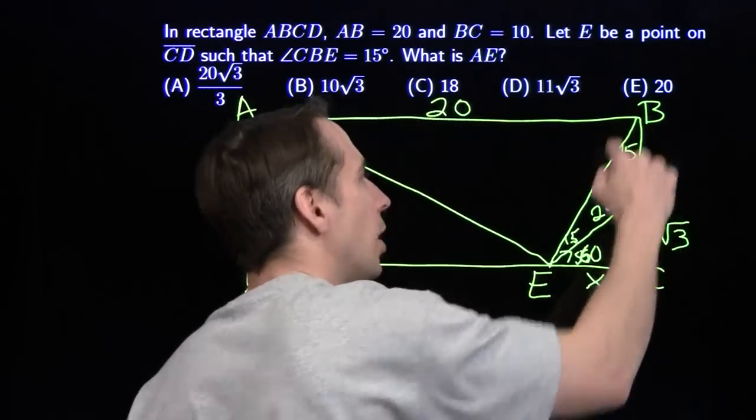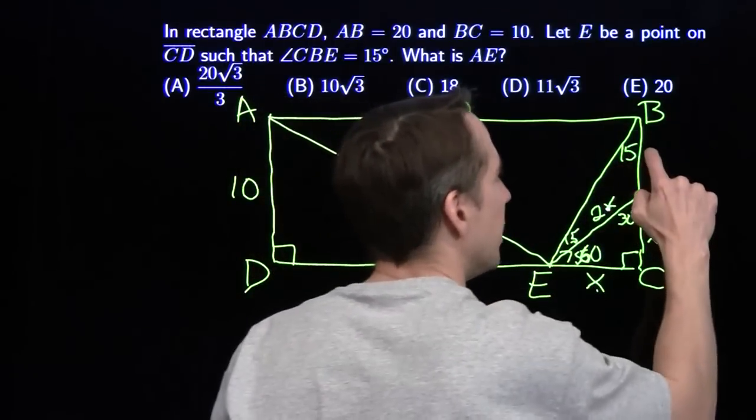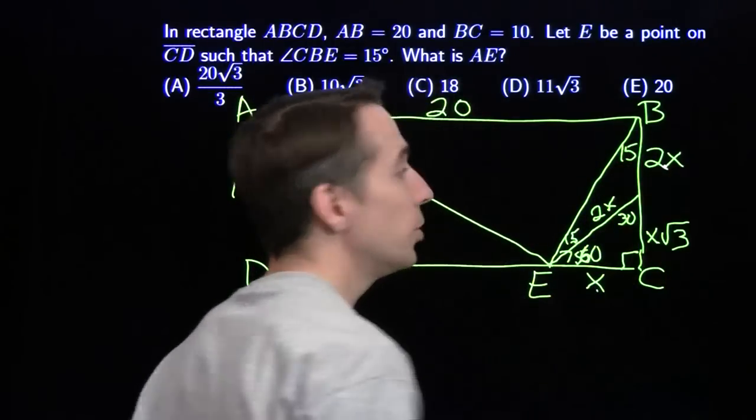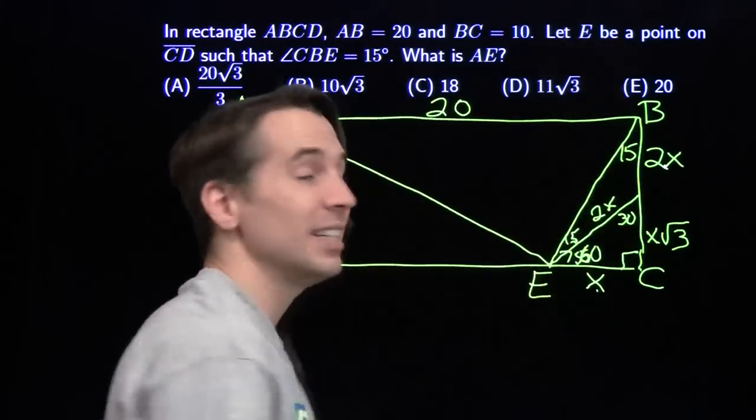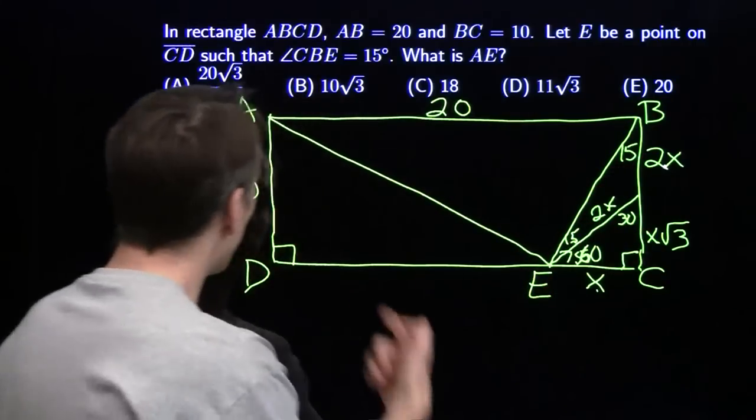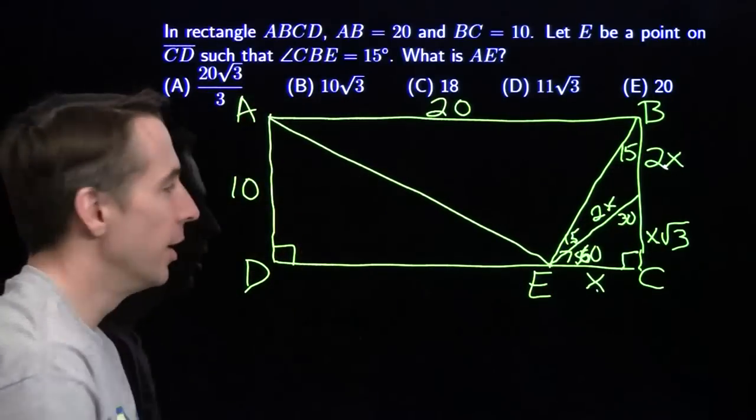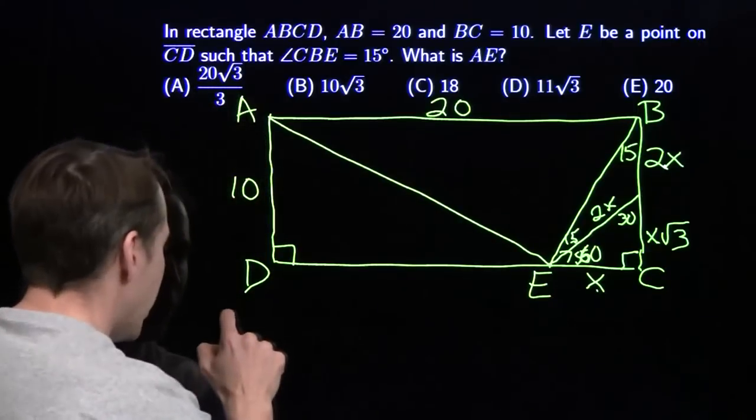And here comes our isosceles triangle. This side equals this side. That means this up here is 2x. And now I've got BC in terms of x. It's 2x plus x root 3. And we know that equals 10. So now we've got x. Now we have a little algebra.